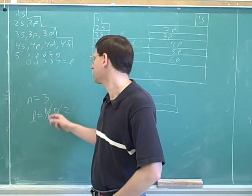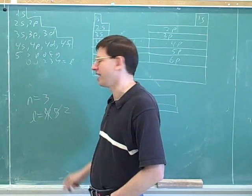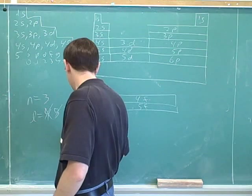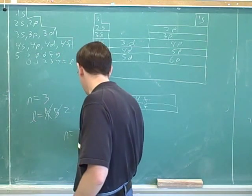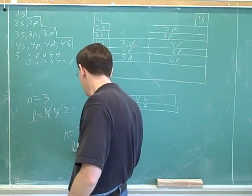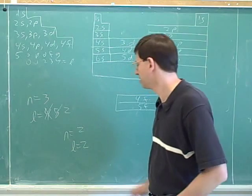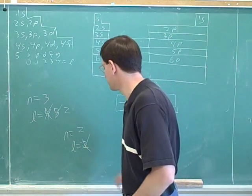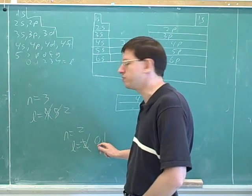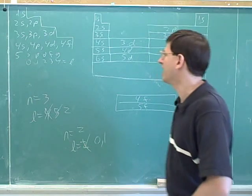L can't go all the way up to n — it can only go to n minus one. For example, suppose n equals two: could L be two? No. The possible L's are zero and one — two subshells, but they start at zero.